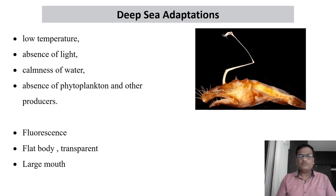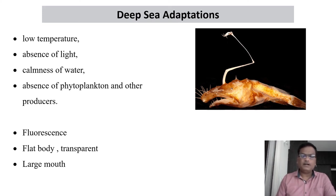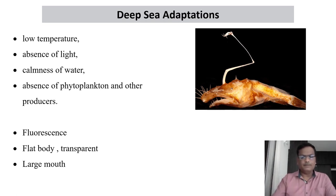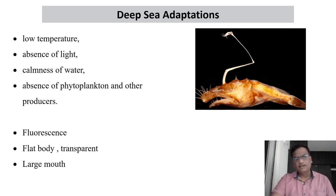Dorsal ventral compression is not helpful — they have to compress their body laterally. Since there is no light, pigmentation is absent, and therefore they normally have a transparent body. They also have a very large mouth compared to other parts of the body. These are some of the adaptations found in deep sea fishes, commonly called deep sea adaptations.